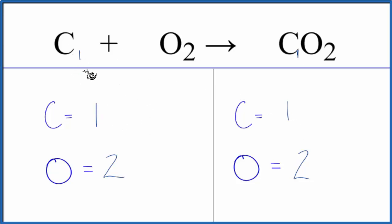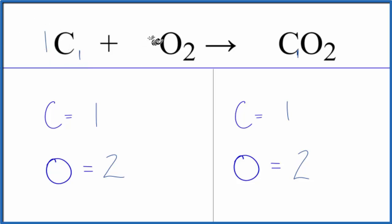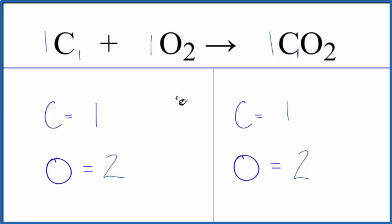If we wanted to write the coefficients — just like with the C, we had a one; if it's not written, the coefficient, that's the number in front, would be a one as well. So sometimes people will say the coefficients are one, one, one for an equation like this, but we usually don't write them. They're assumed to be there, just like this one here is assumed to be there if we don't write it.